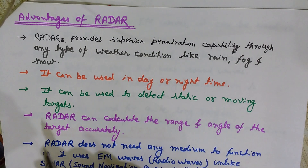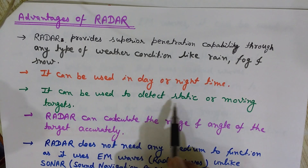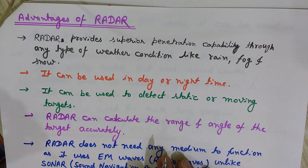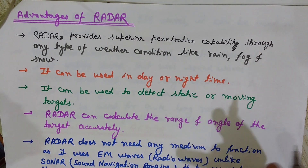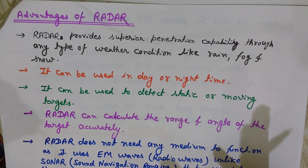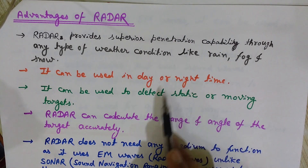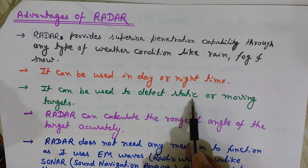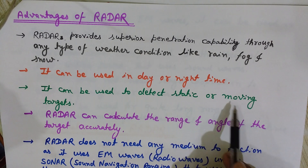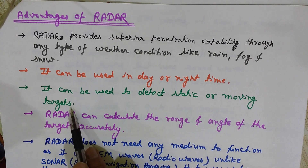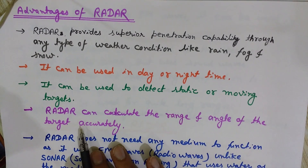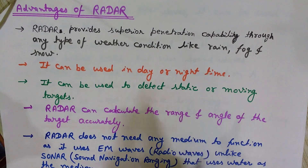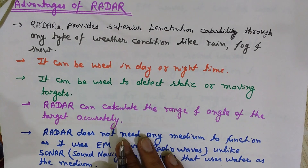Radar can also detect static or moving targets. For a static target, we can find its direction and range. For a moving target, we can calculate its velocity. Radar can calculate the range and angle of the target accurately.